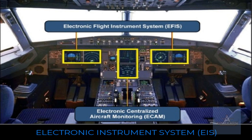The four EFES displays give to the flight crew all the basic flight parameters. The EECOM system gives to the flight crew aircraft system displays, faults, checklists, and the aircraft operational status.